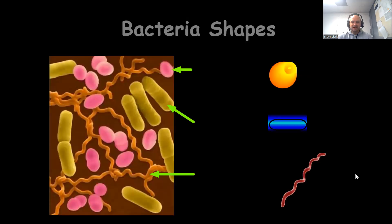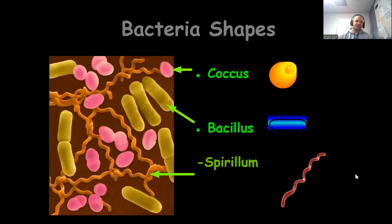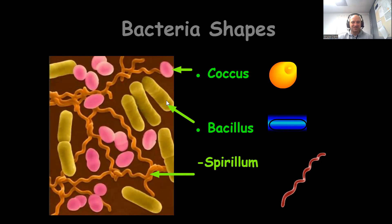Lastly, let's talk about some general shapes of bacteria if we were to look at them under a microscope — three general shapes. Coccus are the spherical shapes. Bacillus are the rod shapes. Spirillum — that's a nice word — are the spiral shapes.